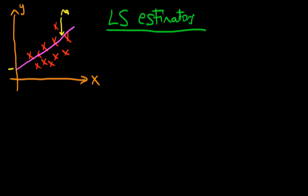We were choosing those parameters in order to minimize the sum of squared distances — specifically the squared vertical distances of each point from that line. The reason we consider vertical distances rather than horizontal distances is that we're trying to minimize the sum of squared prediction errors in our dependent variable Y, which is after all the thing we're trying to predict.